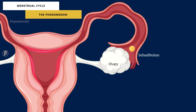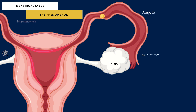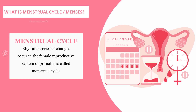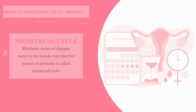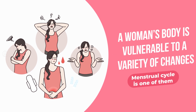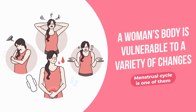Hi, welcome to Bio Passionate. The menstrual cycle is one of the most important phenomena in human reproduction. It's all about the formation, transformation, and discharging of an ovum from the female reproductive system. A rhythmic series of changes occurring in the female reproductive system of primates is called the menstrual cycle. It occurs approximately once every 28 or 29 days.